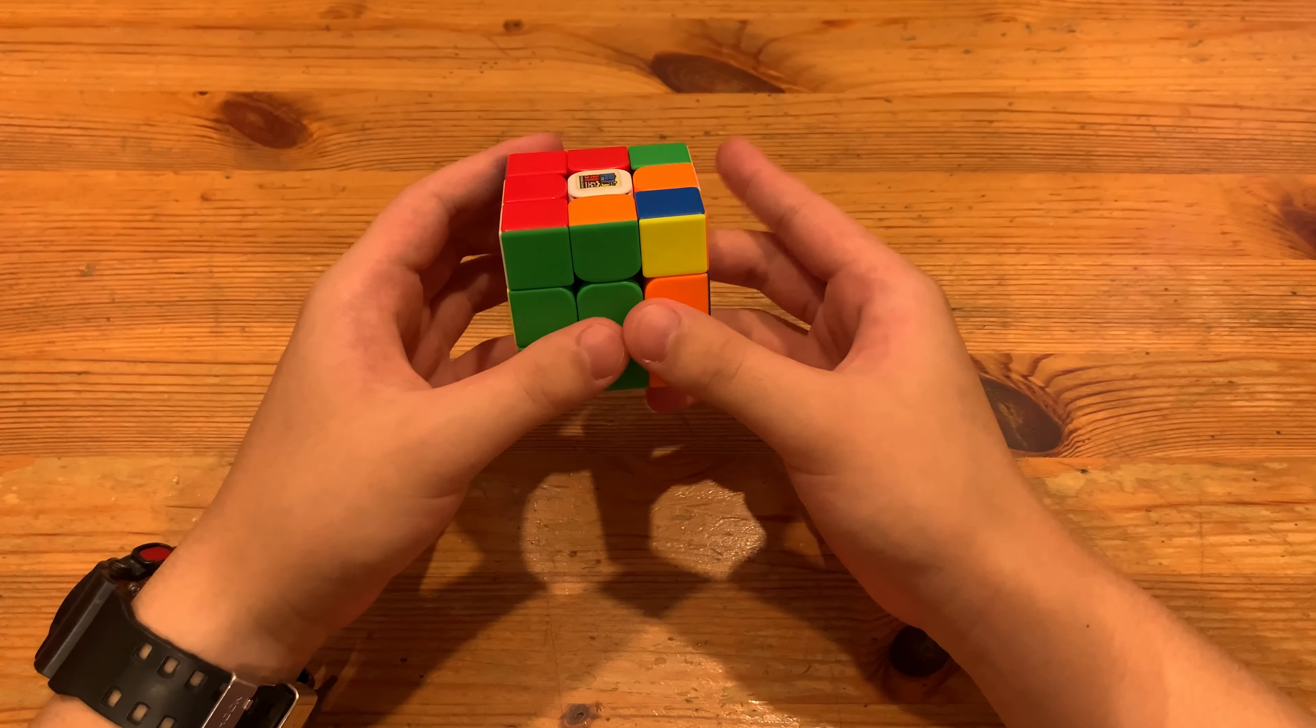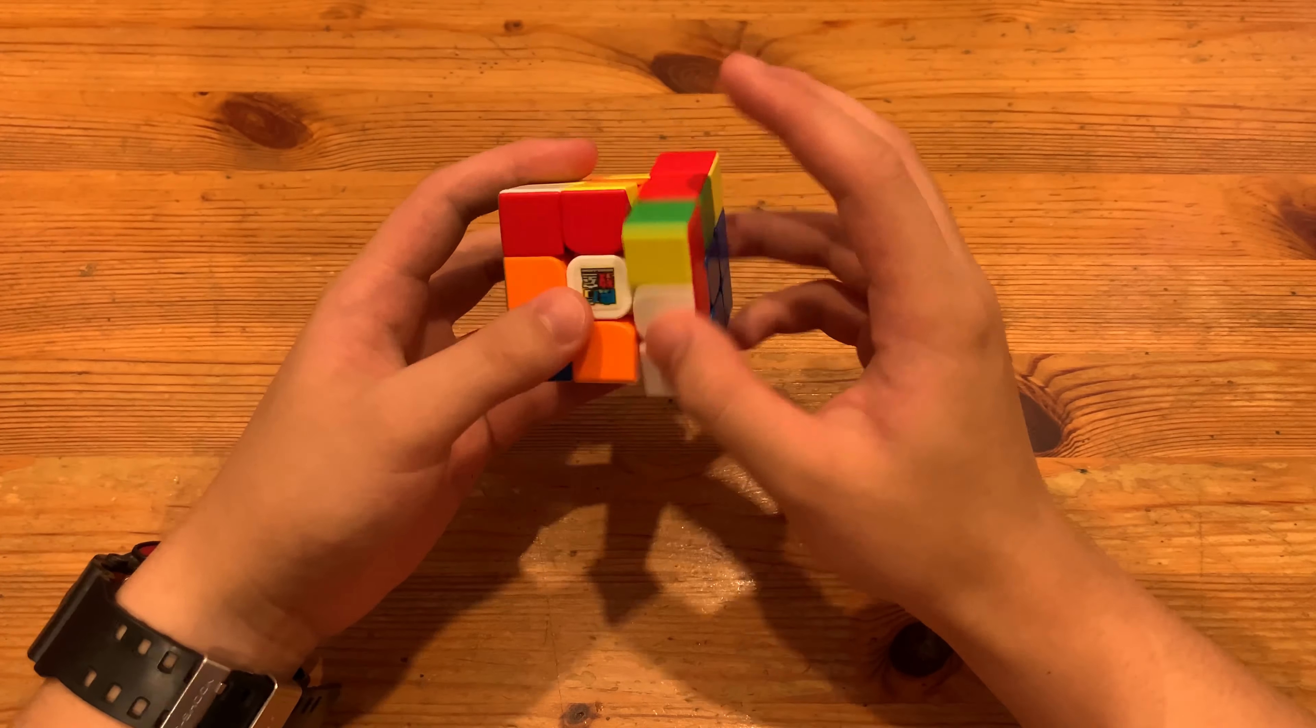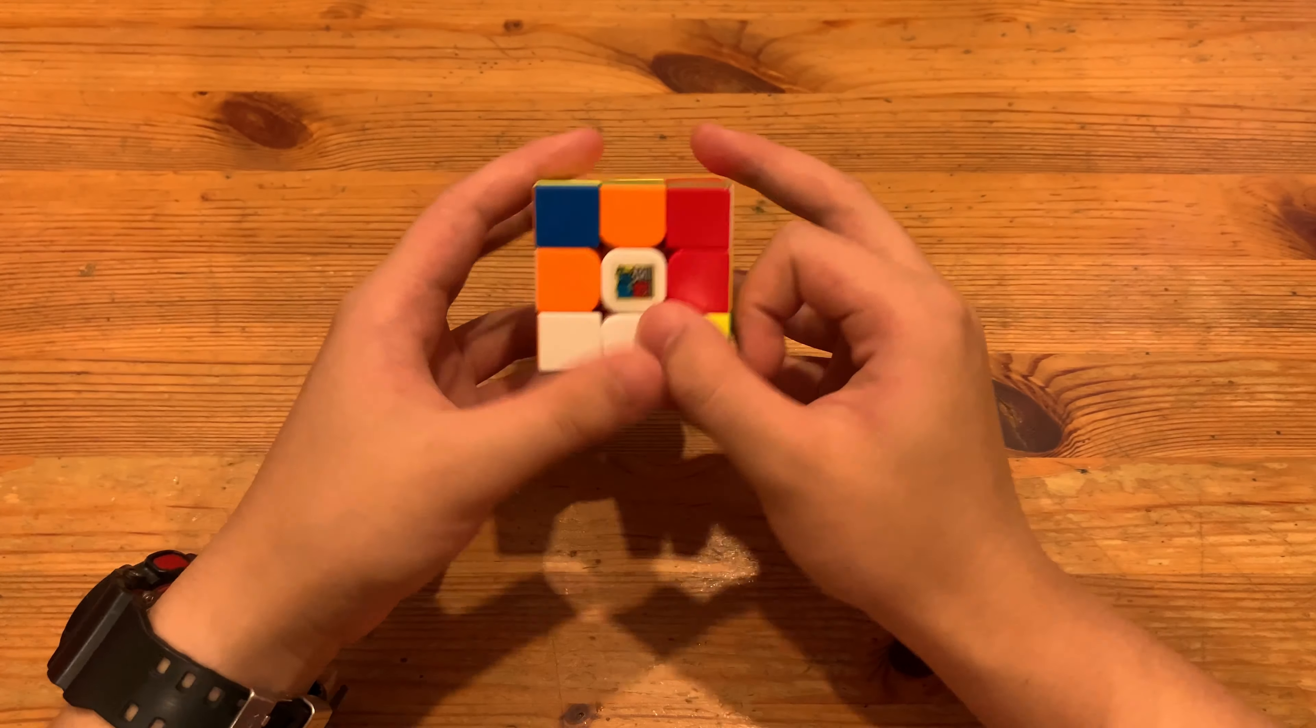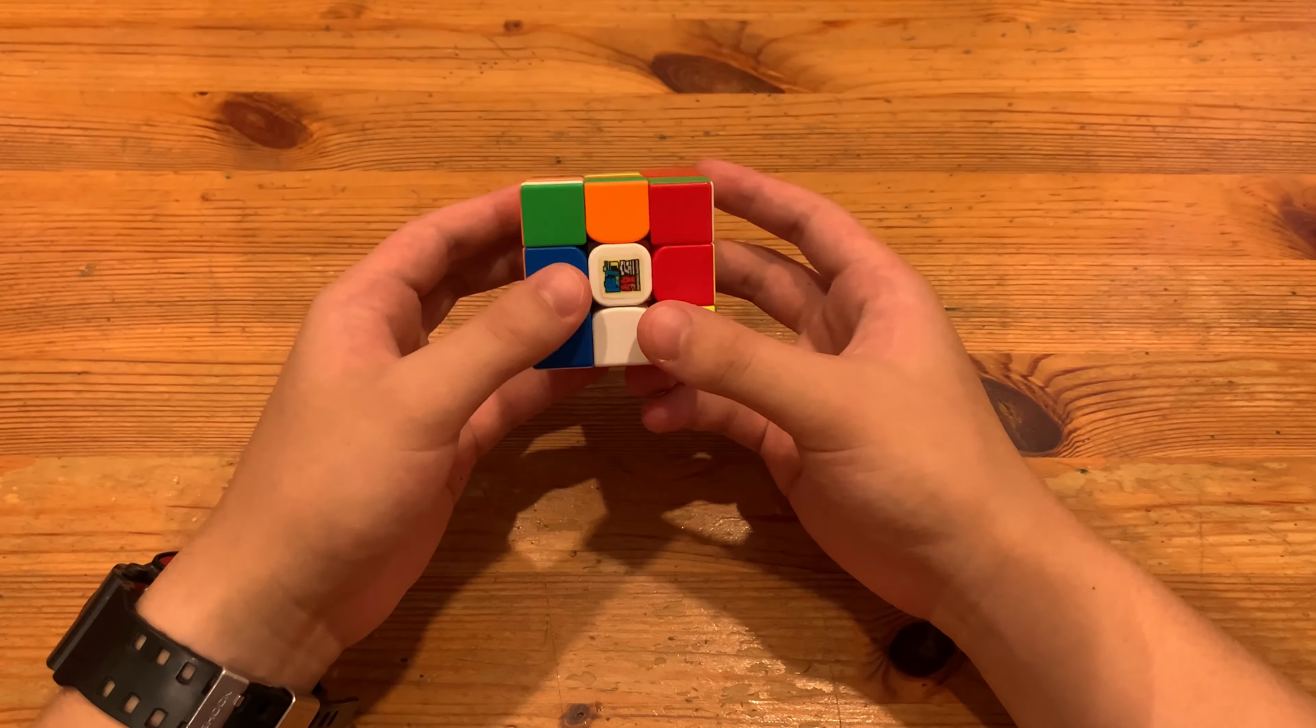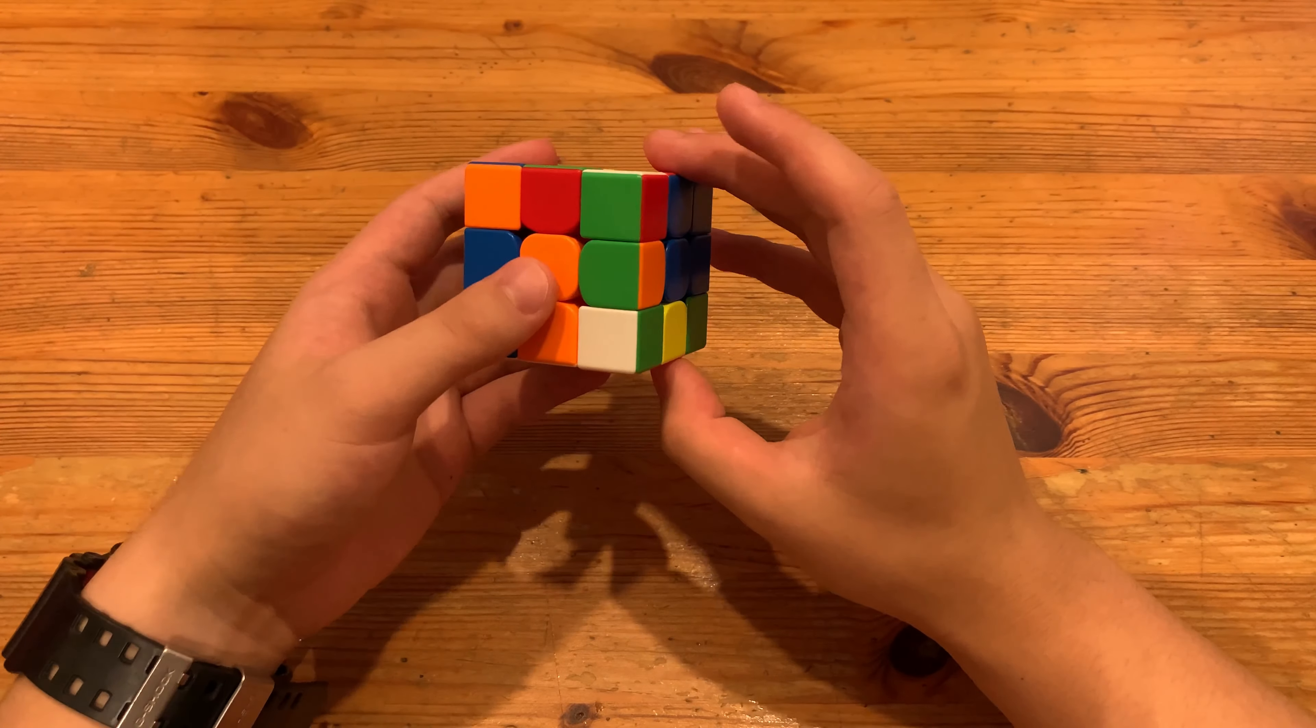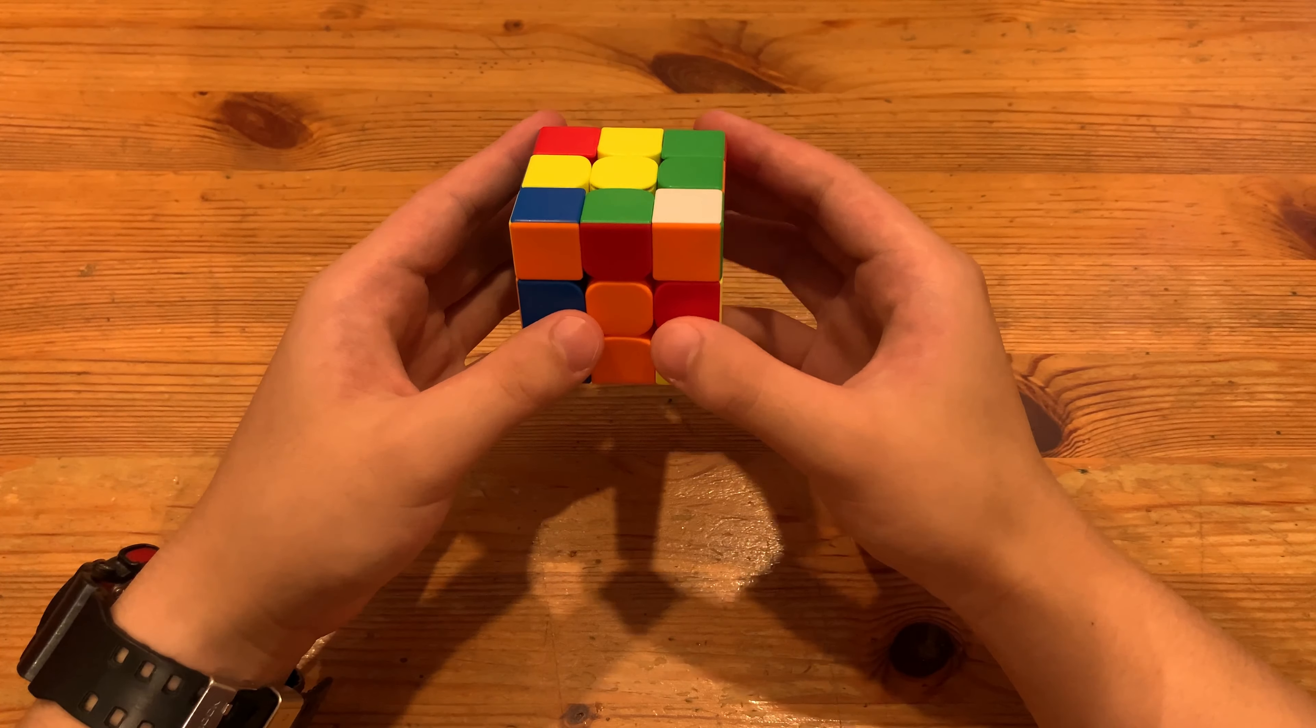He solves the X cross by doing a ZY, R to insert this cross-edge, F to move it over, L' to move this into position, so you can do U', L', and then finally a wide L to insert this cross-edge, and then rotate.